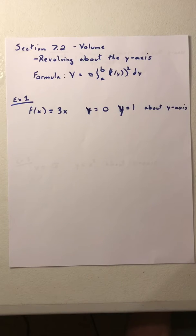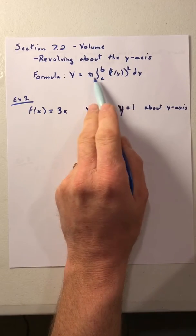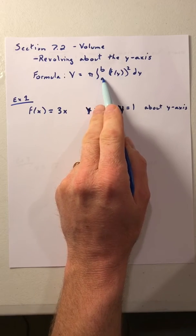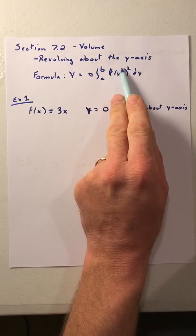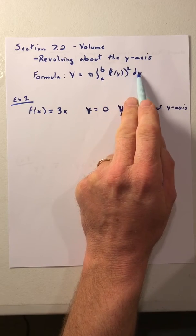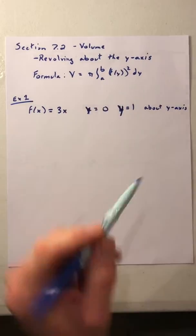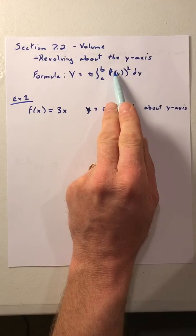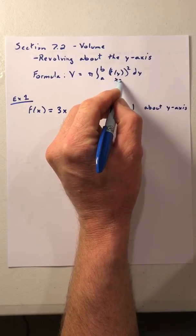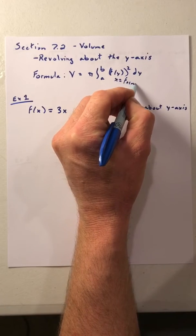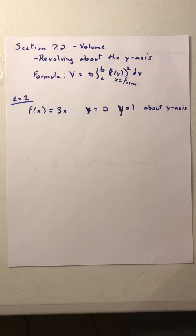Today I want to spend some time finding the volume of a figure when we revolve it about the y-axis. If I revolve it around the y-axis, a few things are going to change. The formula is: volume equals pi times the integration from a to b of f(y) squared dy. We do this because we're revolving around the y-axis instead of the x-axis. If we're in terms of f(y), that means it has to be in x-equals form — we're integrating with respect to y instead of x.